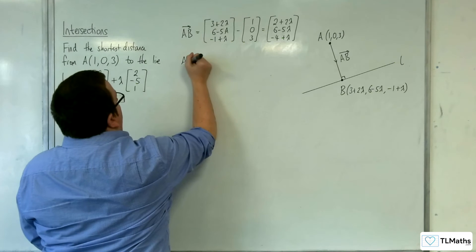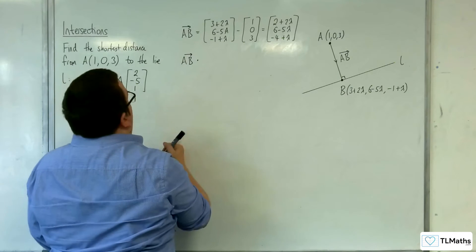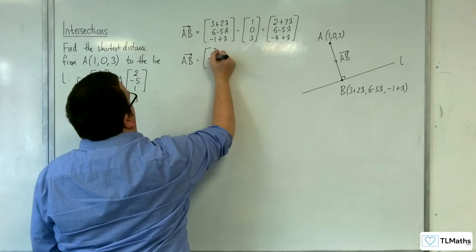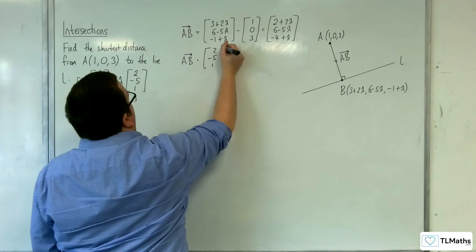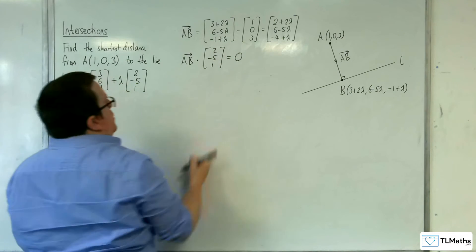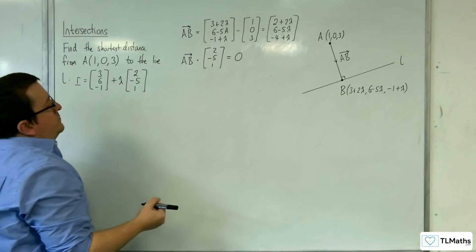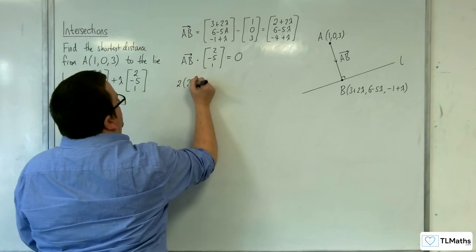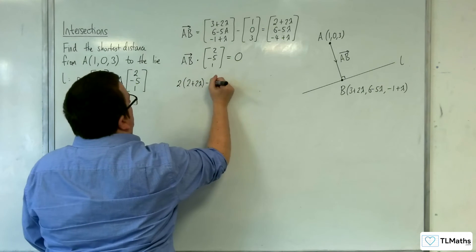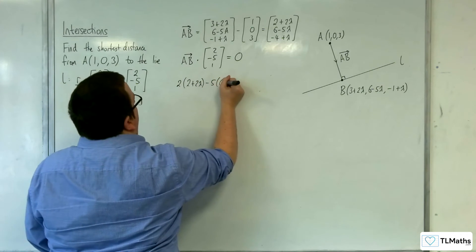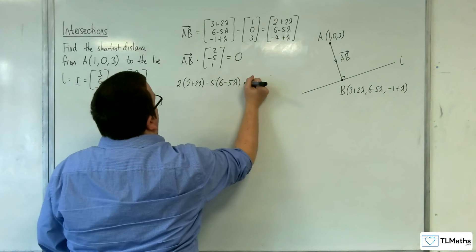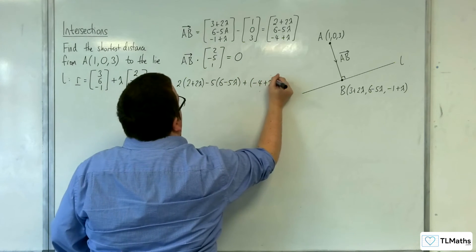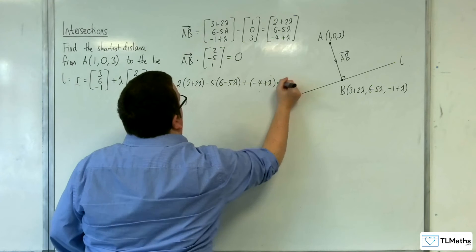Now that dotted with the direction vector (2, -5, 1) must be equal to 0. So 2 lots of (2+2λ), take away 5 lots of (6-5λ), plus 1 lot of (-4+λ), must be equal to 0.